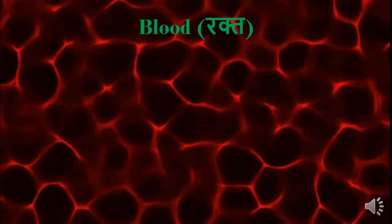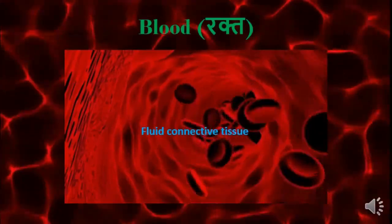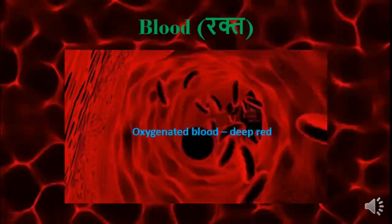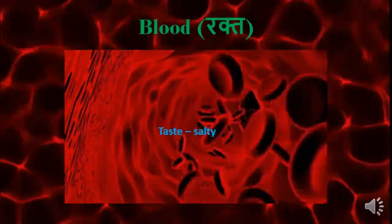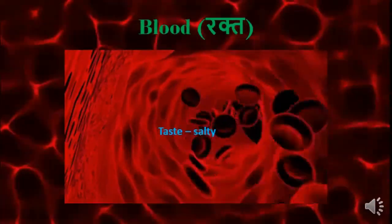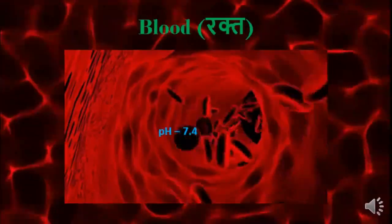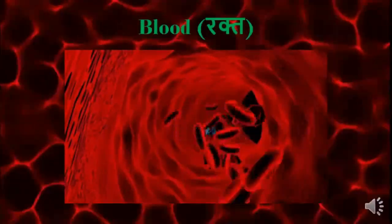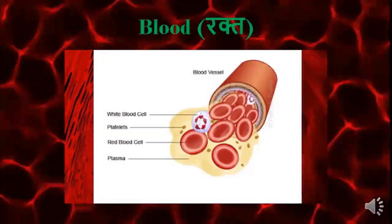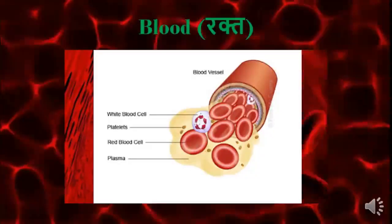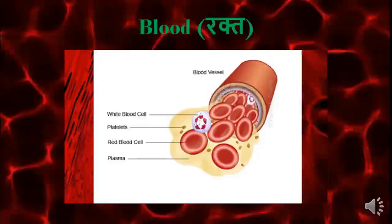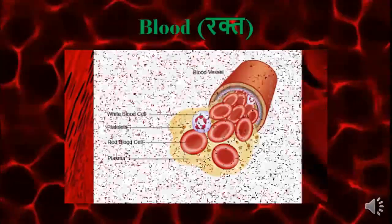Let us study blood. What is blood made up of? Blood is a fluid connective tissue. Oxygenated blood looks deep red in color. Its taste is salty and its pH is 7.4. Blood is made up of different blood cells like white blood cells, platelets, red blood cells, and plasma.